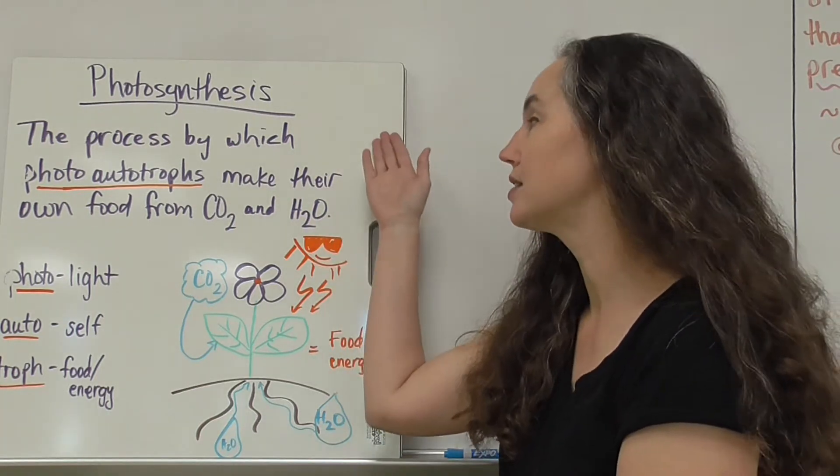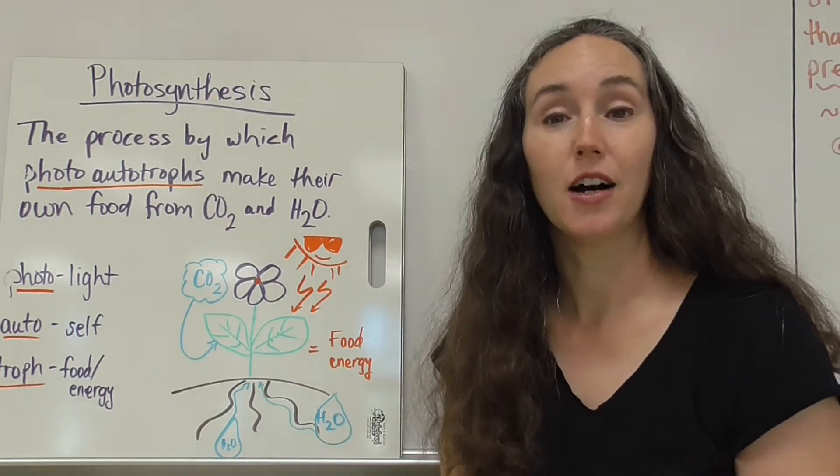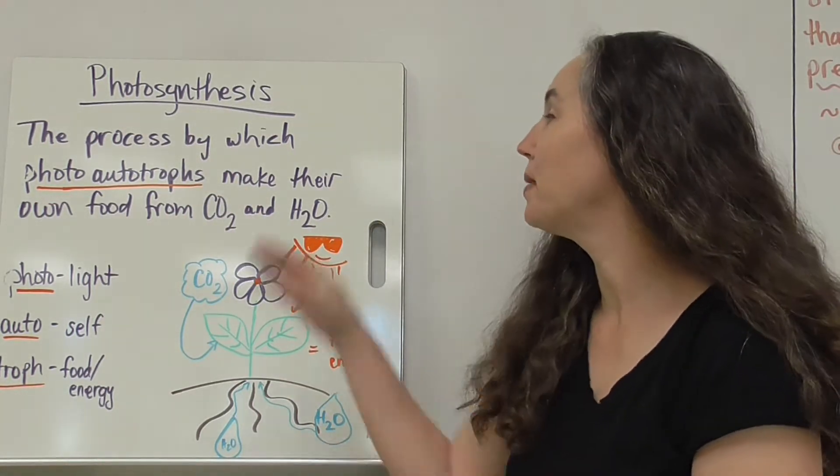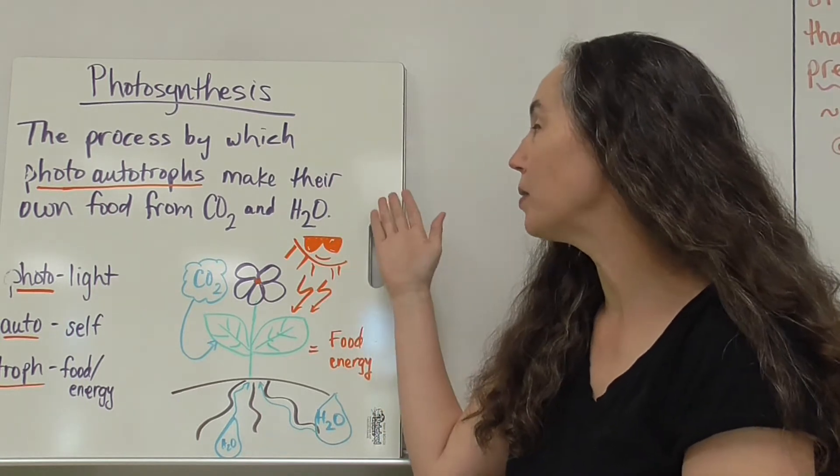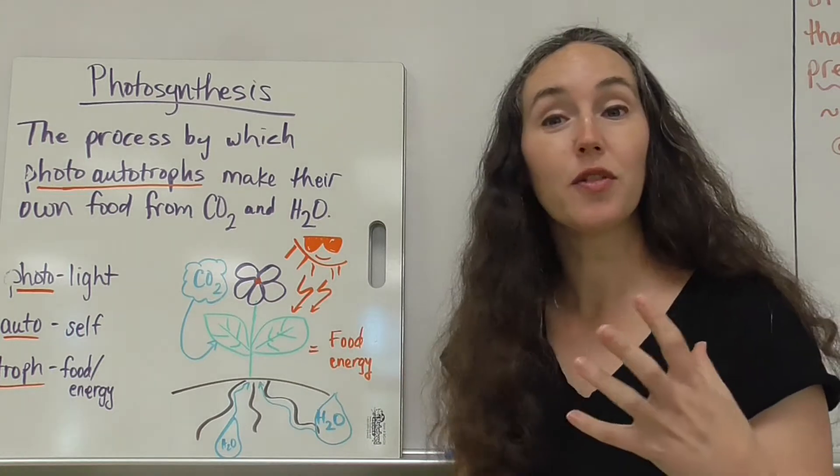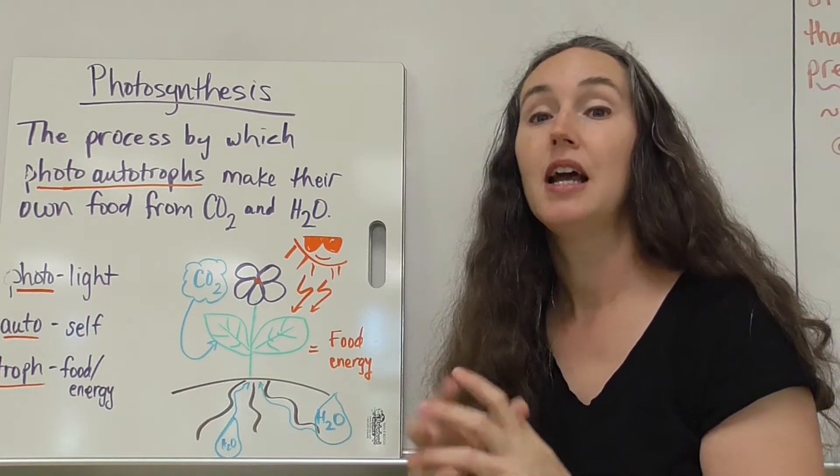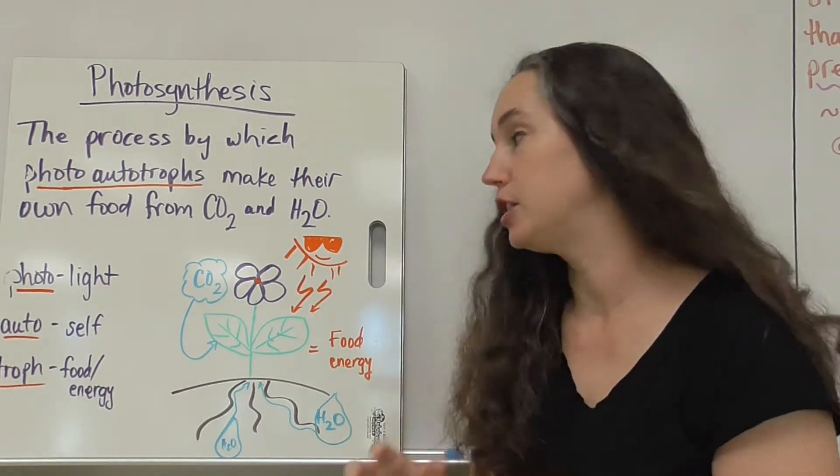Photosynthesis is the process by which photoautotrophs like plants, algae, and photosynthetic bacteria make their own food from carbon dioxide and water. Photoautotroph is a very fancy word but if we break it down it tells us what kind of organisms do photosynthesis and how they do it.